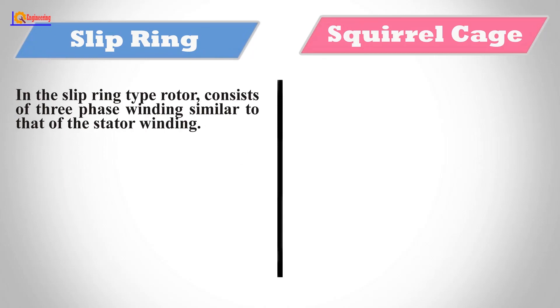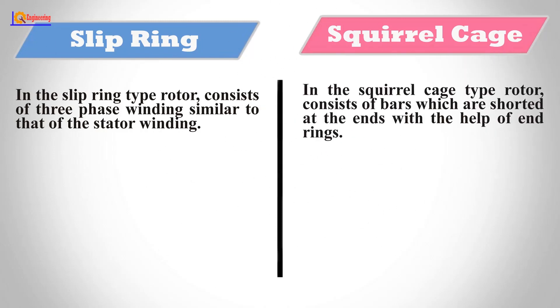In the slip ring rotor consists of three-phase winding similar to that of stator winding. In the squirrel cage type rotor consists of bars which are shorted at the ends with the help of end rings.